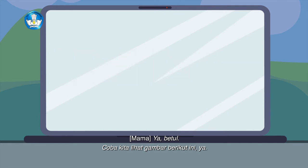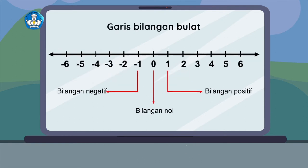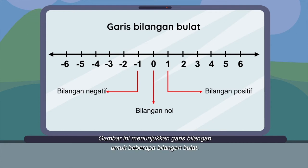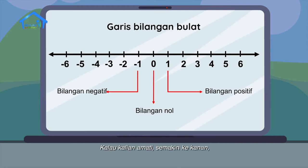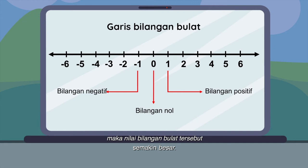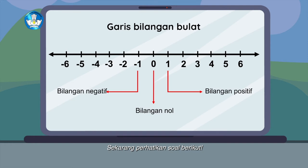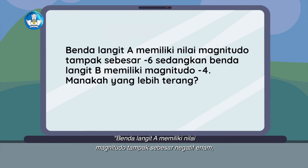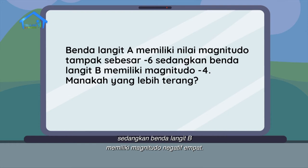Coba kita lihat gambar garis bilangan untuk beberapa bilangan bulat. Semakin ke kanan, maka nilai bilangan bulat tersebut semakin besar. Sekarang perhatikan soal berikut. Benda langit A memiliki nilai magnitudo tampak sebesar negatif 6. Sedangkan benda langit B memiliki magnitudo negatif 4. Manakah yang lebih terang?